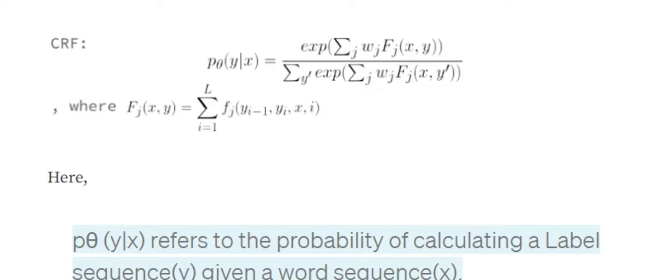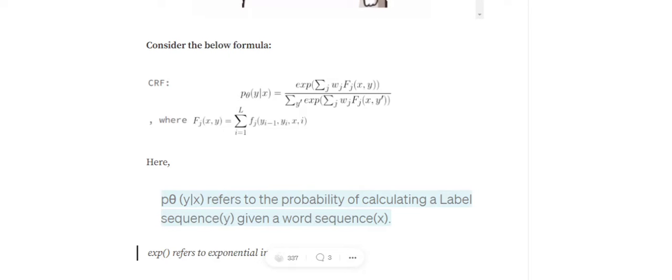The full equation is: P(y | x) = exp( Σ_j w_j * F_j(x, y) ) / Σ_{ŷ} exp( Σ_j w_j * F_j(x, ŷ) ). This looks complex, so let's break it down. F_j(x, y) is the summation over all positions i of the small feature function f_j(y_{i-1}, y_i, x_i). Essentially, we are calculating a particular feature function for all words in the given sentence.